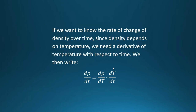If we want to know the rate of change of density over time, since density depends on temperature, we need a derivative of temperature with respect to time. So we write: d-rho-dt (lowercase t, that's time) equals d-rho-dT (capital T, temperature) times dT-dt. This is the rate of change of density with respect to temperature, times the rate of change of temperature with respect to time. In this first case temperature is the independent variable, but over here temperature becomes the dependent variable.